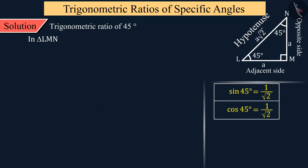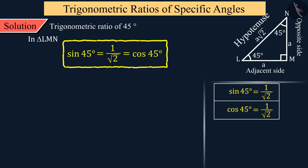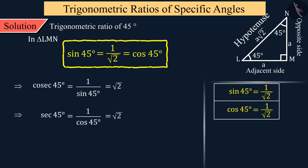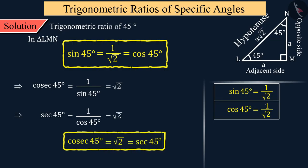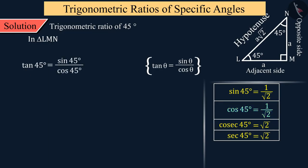Note that the values of sin 45° and cos 45° are the same. We can say that their inverse values — cosec 45° and sec 45° — will also be the same. Similarly, tan 45° equals sin 45° divided by cos 45°. Since both values are equal, their ratio gives tan 45° = 1.